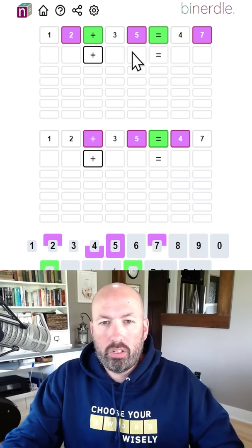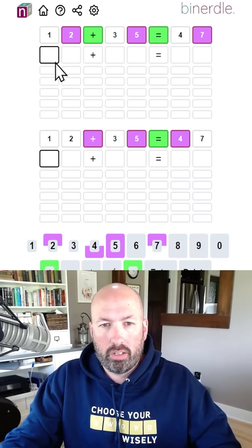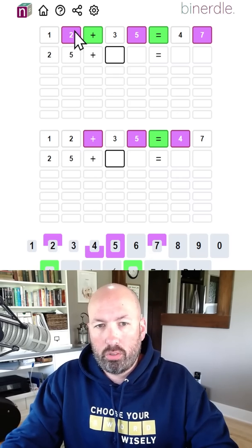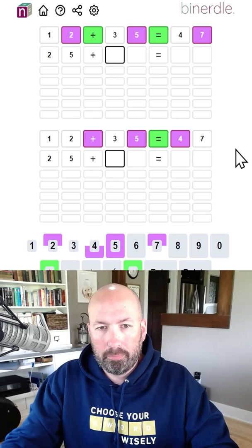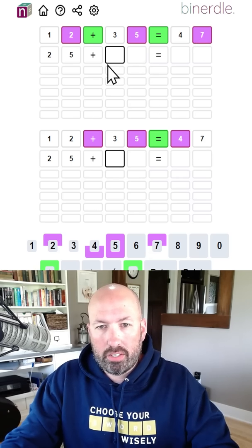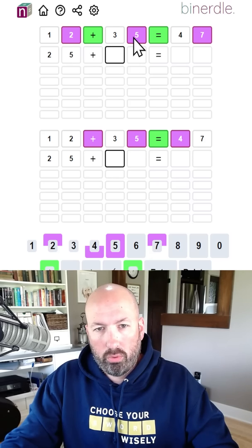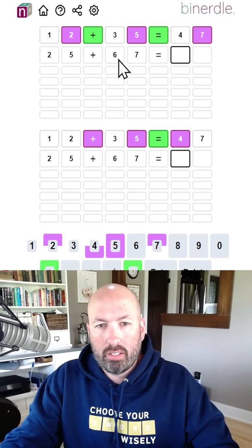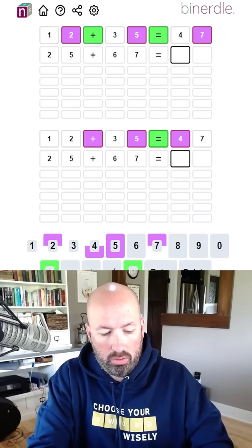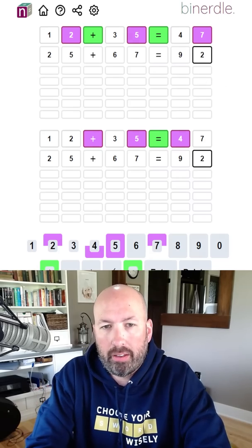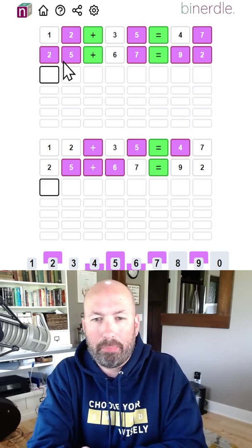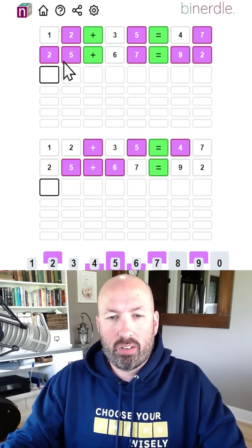This one up here is a two-digit plus a two-digit. There's not a one. We could do something like 25, I'm just using the numbers that we know are in here, plus, there's no one, three, or four. 67 would be 92. Seems reasonable. Let's go with that. Okay, so we got a lot of the digits, but none of them are in the right place.